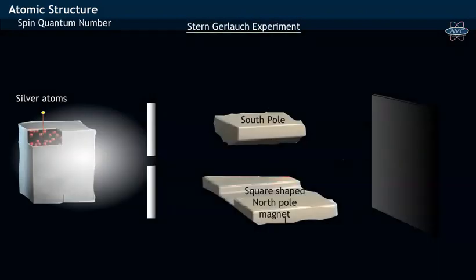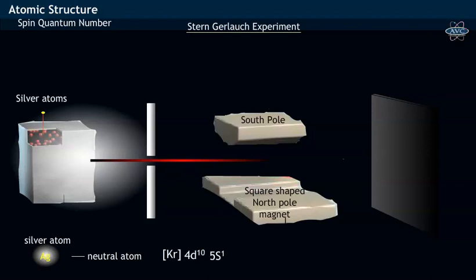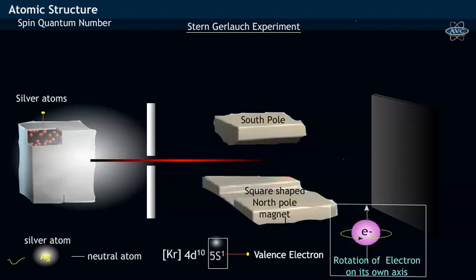In Stern experiment, a thin beam of silver atoms is used. Here, the silver atom, being a neutral species, has got electronic configuration of Krypton, having one valence electron in 5s orbital. As silver atom has got single valence electron, its rotation on its own axis generates intrinsic magnetic field and thus behaves as a magnet.